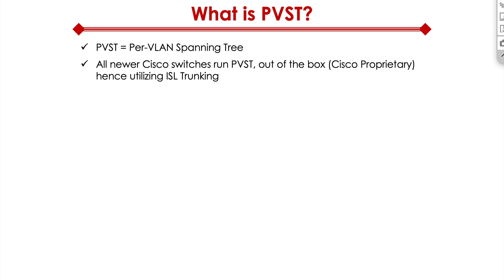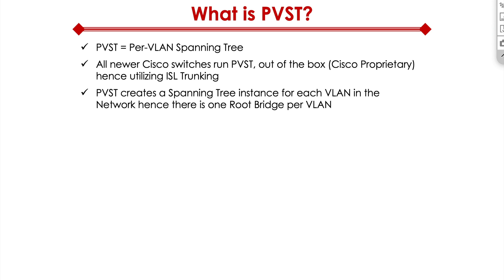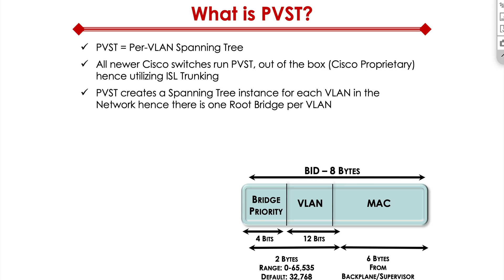They utilize ISL trunking. PVST creates a spanning tree instance for each VLAN. The idea is that it's Per VLAN Spanning Tree, so instead of having a single spanning tree for all the VLANs, now we have a VLAN-specific spanning tree. Before I get into the functionality of it, let's discuss first the layer 2 frame header architecture of PVST.